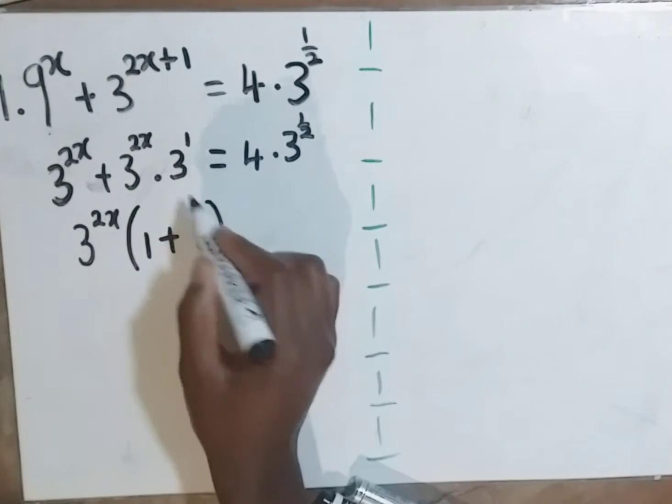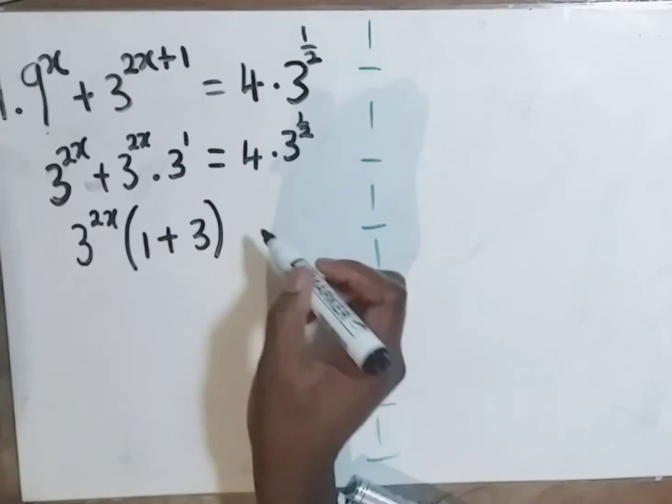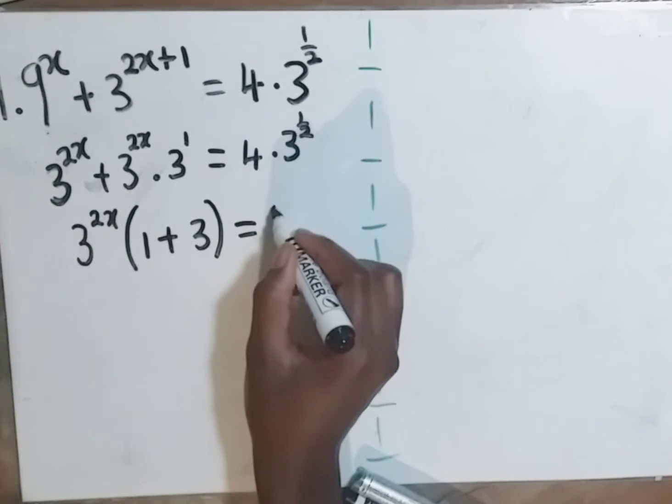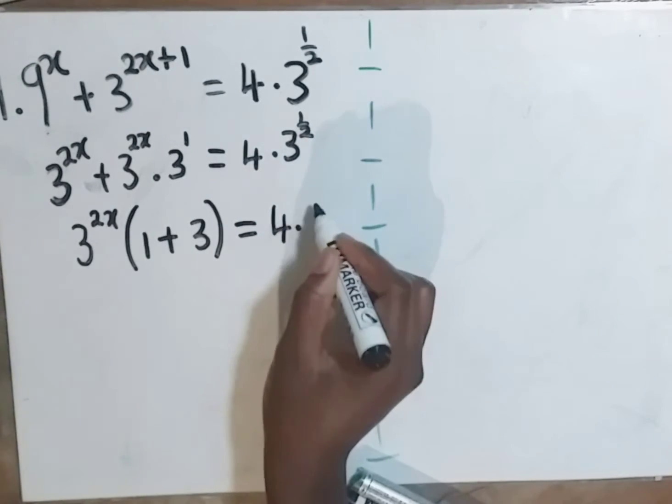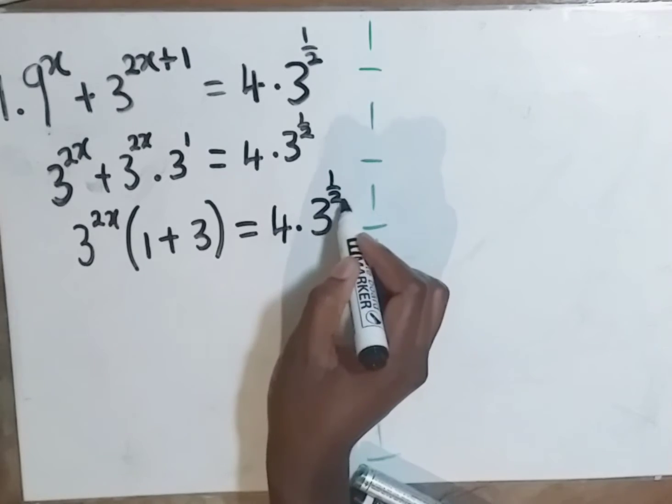This side is just a 3. Remember 3 to the power 1 is just a 3. This is all equal to 4 dot 3 to the power half.